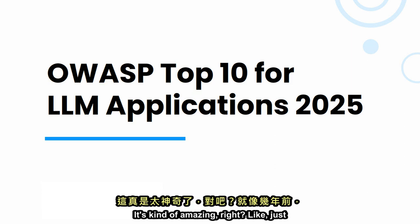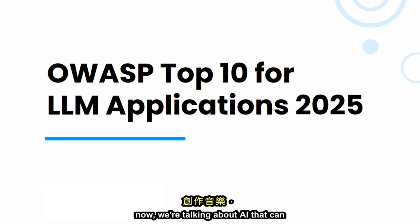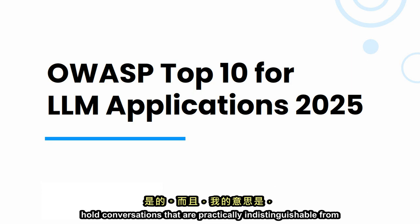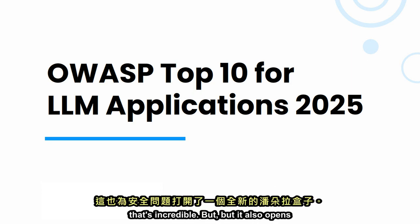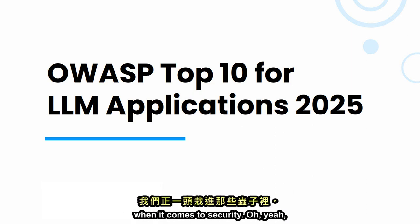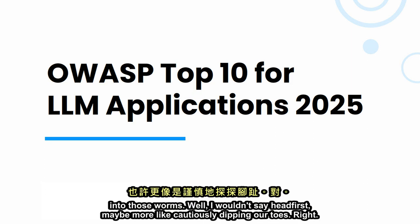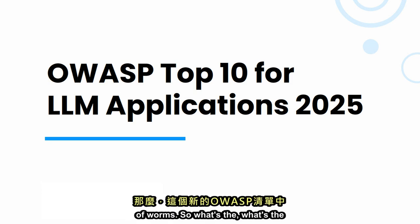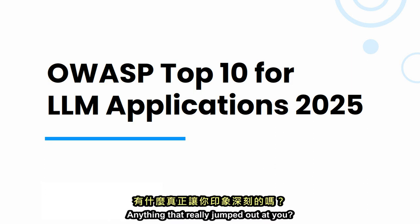It's kind of amazing, right? Like just a few years ago, this was all science fiction stuff. But now we're talking about AI that can write code, compose music, even hold conversations that are practically indistinguishable from a human. And that's incredible, but it also opens up a whole new can of worms when it comes to security. That's why we're here — cautiously dipping our toes into the can of worms. So what's the biggest takeaway from this new OWASP list? Anything that really jumped out at you?